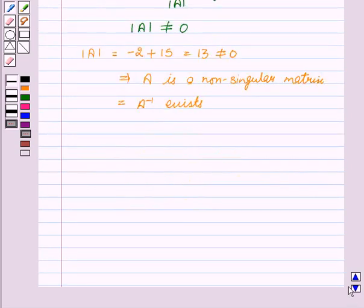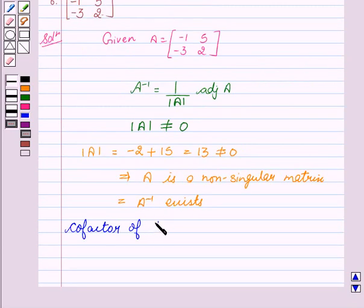Now we will find the cofactors for calculating the adjoint of A. Cofactor of -1 equal to (-1)^(1+1) into 2 which is equal to 2.